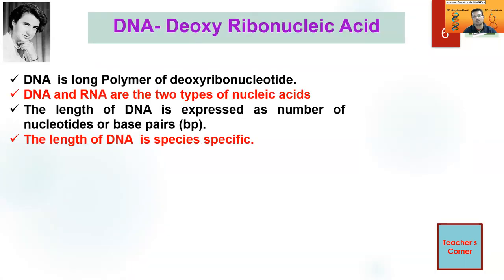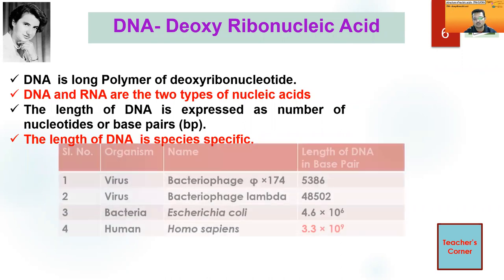DNA, or deoxyribonucleic acid, is a long polymer of deoxyribonucleotides. DNA and RNA are two types of nucleic acid, and the length is expressed as the number of nucleotides or base pairs. As you know, it is species-specific — the length of DNA is specific in a given species.